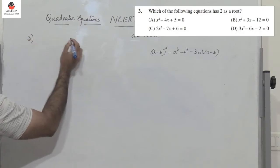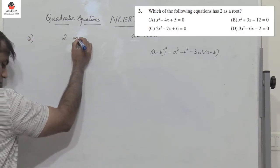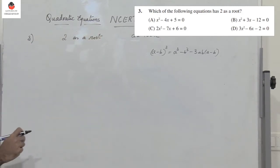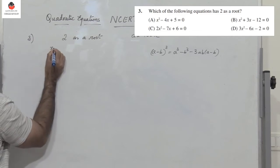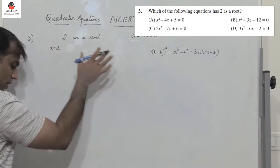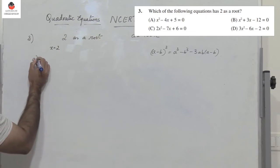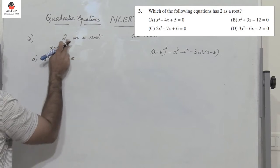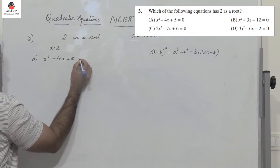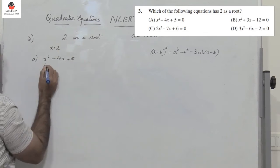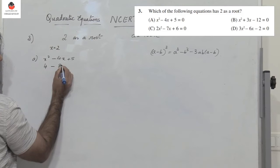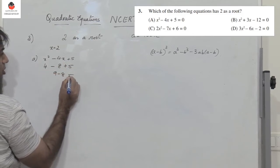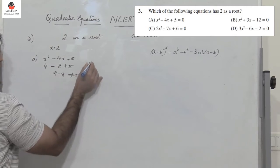Question 3: which of the following equations has 2 as a root? If 2 is a root, substituting x equals 2 should make the equation equal to 0. Let's check option A: x squared minus 4x plus 5. Substituting x equals 2 gives 4 minus 8 plus 5 equals 1, which is not equal to 0. So A is not the right answer.